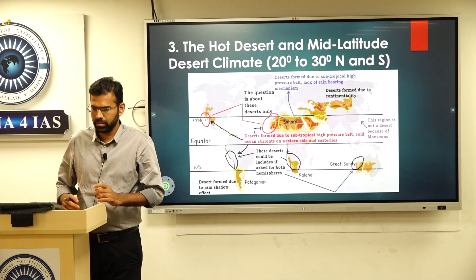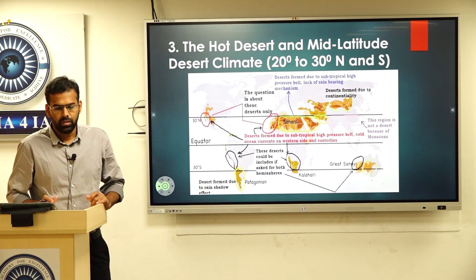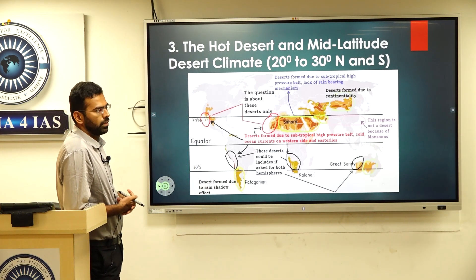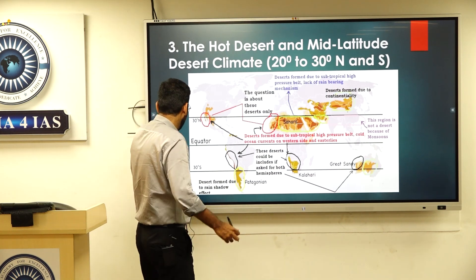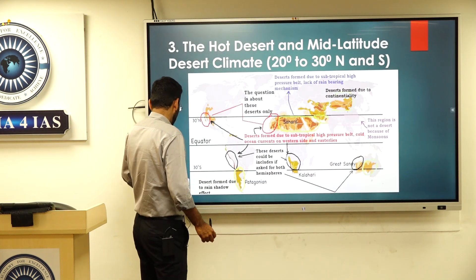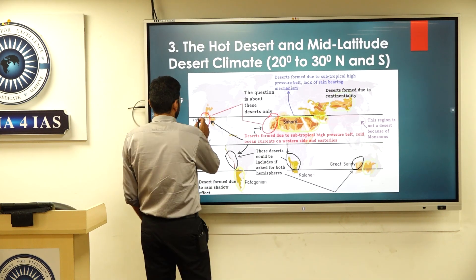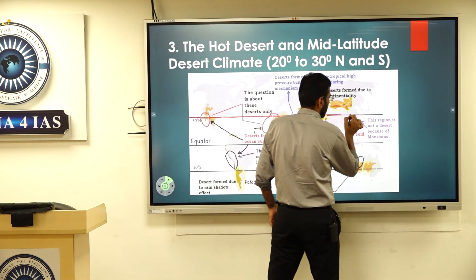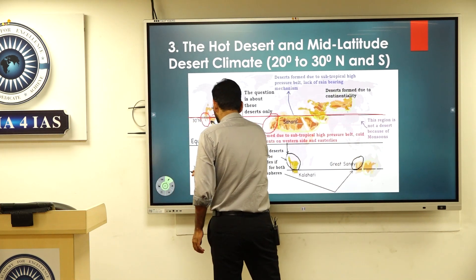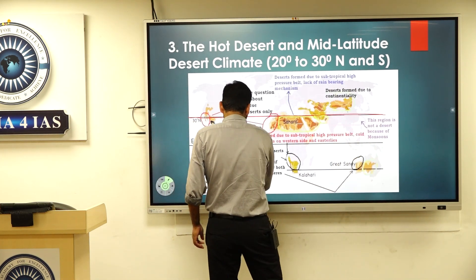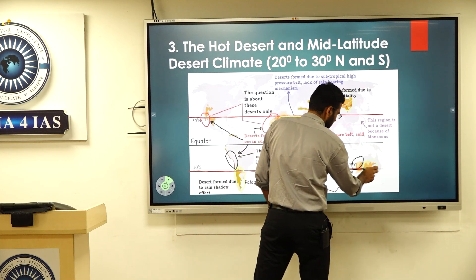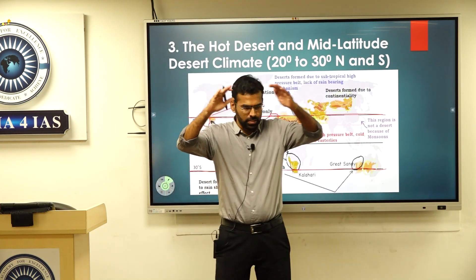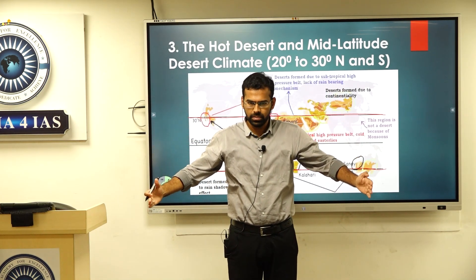Next climate is hot desert climate and mid-latitude climate. We know that at 30 degrees north and 30 degrees south, you will have descending winds — descending cold dry winds.